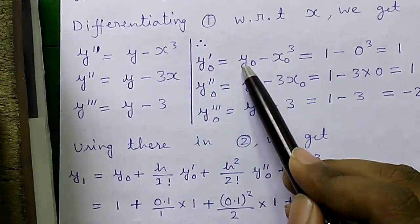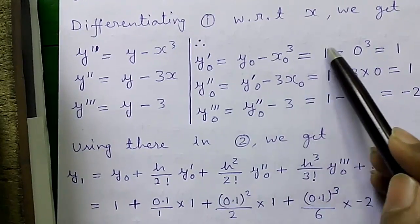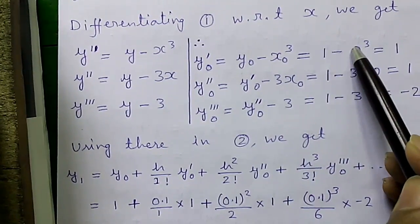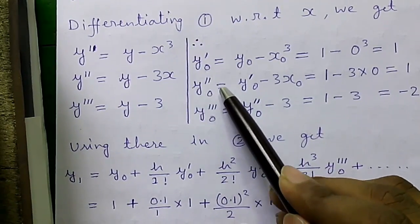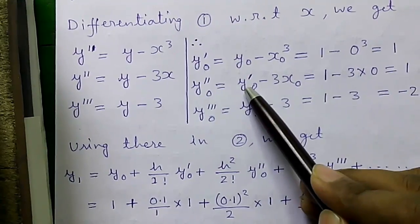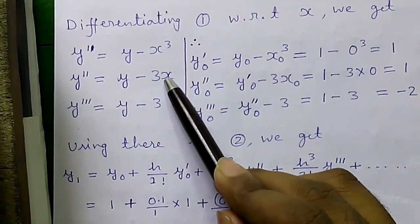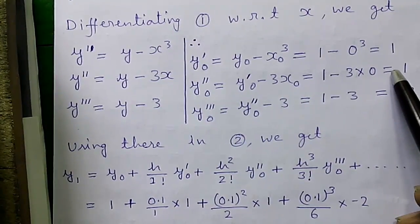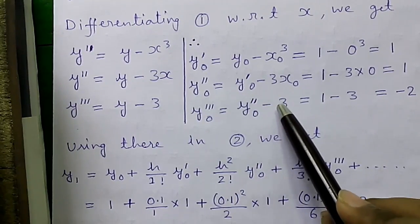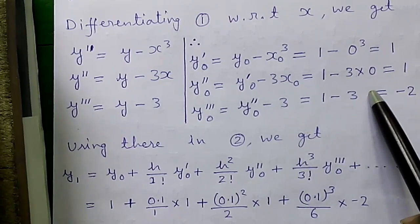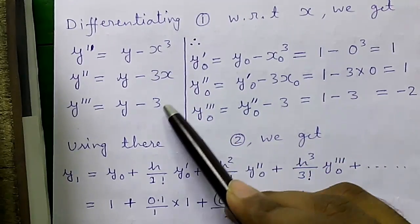Putting y₀ = 1 and x₀ = 0: y'₀ = y₀ - x₀³ = 1 - 0 = 1. Next, y''₀ = y'₀ - 3x₀ = 1 - 0 = 1. And y'''₀ = y''₀ - 3 = 1 - 3 = -2. We are just substituting the values into these three expressions.